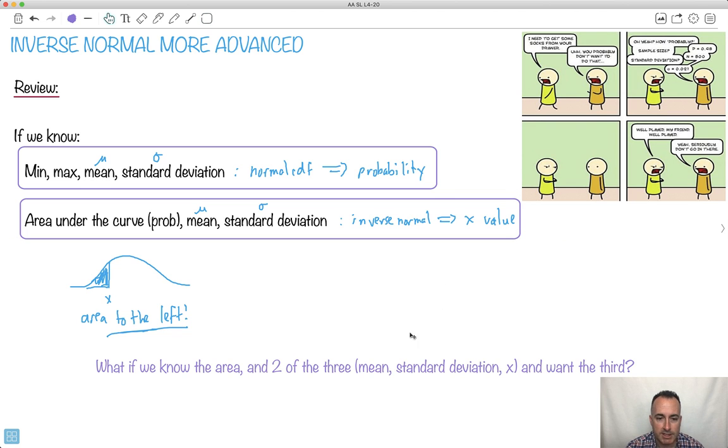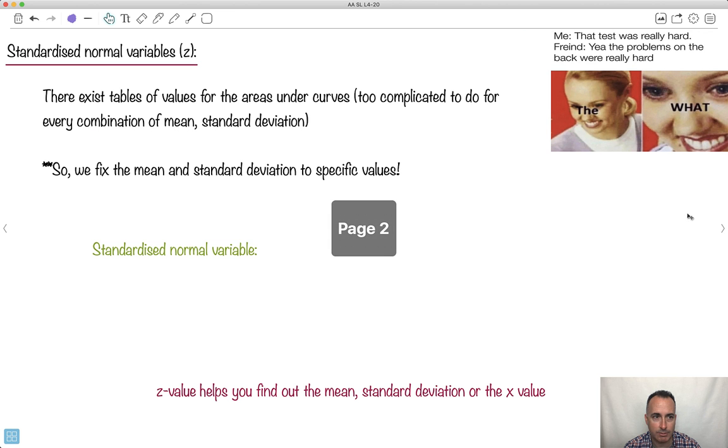But what if it's more advanced where maybe you don't know the mean, or maybe you don't know the standard deviation? I mean, if you don't know the x, it's easy, use inverse normal. But what if you don't know the mean or the standard deviation? Then you can't use this. Or can you? That's the whole point of this.